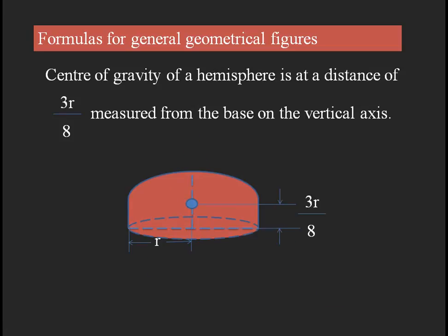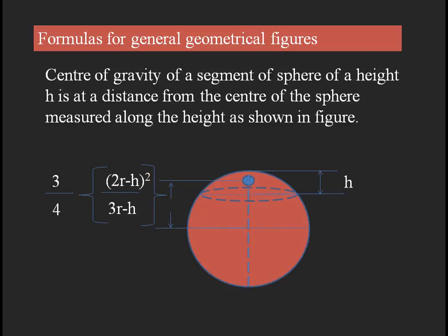For a hemisphere — which is the half-cut portion of a sphere — the center of gravity from the base is at a distance of 3r/8. By knowing the diameter we can find the center of gravity of the hemisphere.